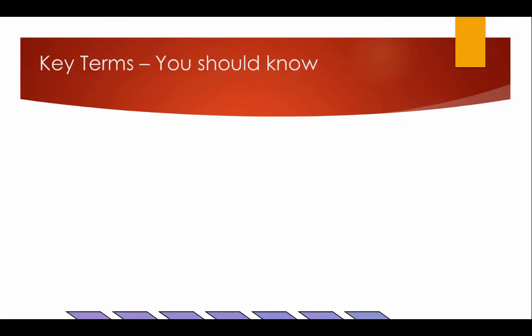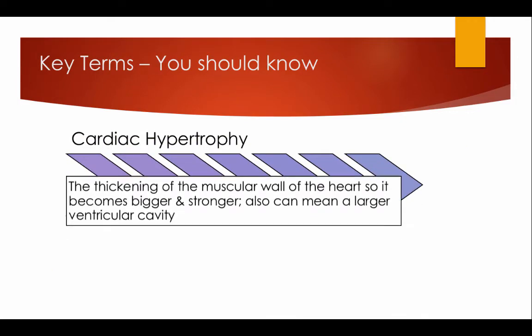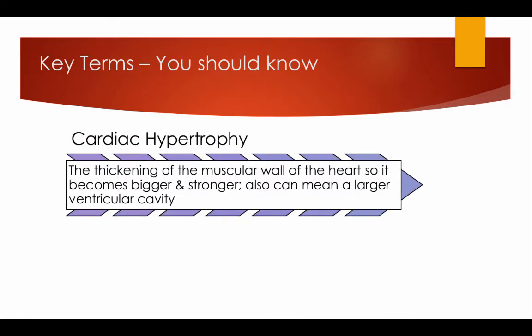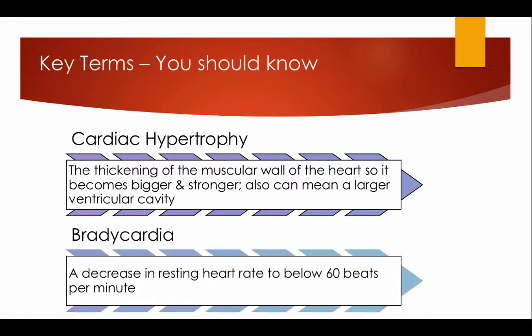Key terms you should know. Cardiac hypertrophy: the thickening of the muscular walls of the heart so it becomes bigger and stronger, also meaning a larger ventricular cavity. Bradycardia: a decrease in the resting heart rate to below 60 beats per minute.